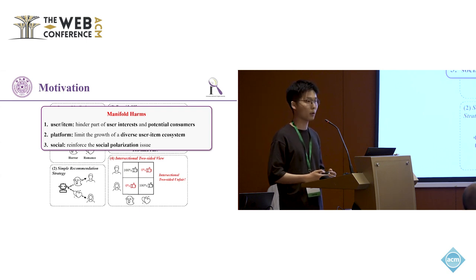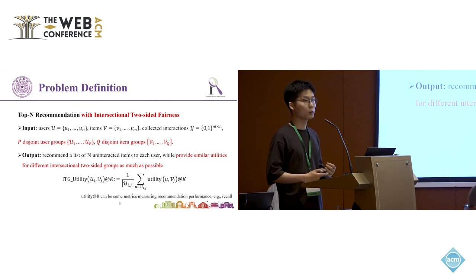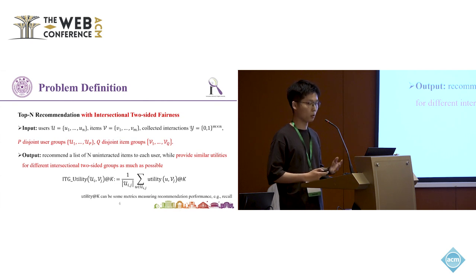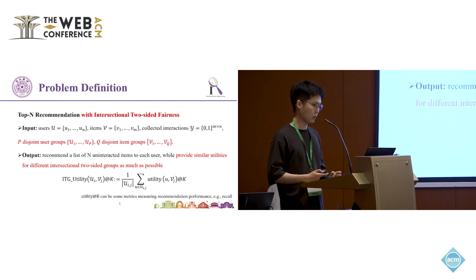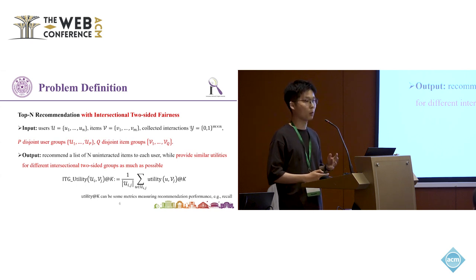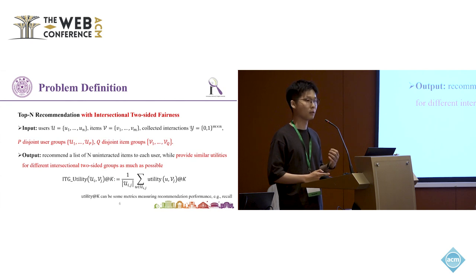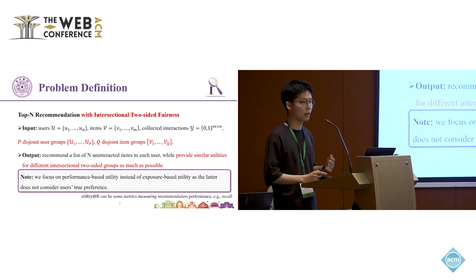So it's important to address this problem for recommendation systems. Let's formally define intersectional two-sided fairness. We build on the traditional top-k recommendation task. Suppose the users and items are divided into p and q groups, then the potential interactions can be divided into p times q intersectional groups. To study fairness, we further define the intersectional group utility, which reflects the received recommendation performance of potential interactions in this group. Without loss of generality, we use a recall-based metric. Intersectional two-sided fairness aims to provide similar utilities for different intersectional two-sided groups, seeking independence of the group utilities and their two-sided group information. Note that we focus on performance-based utility instead of exposure-based utility, as the latter does not consider users' true preference.